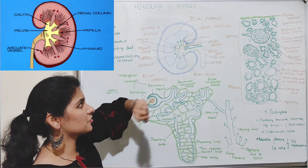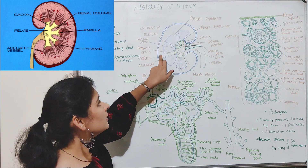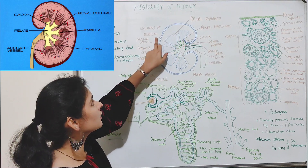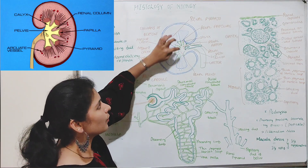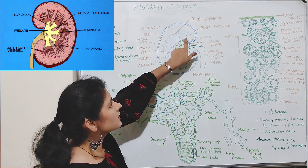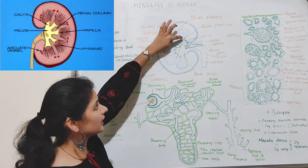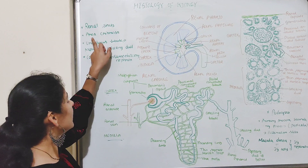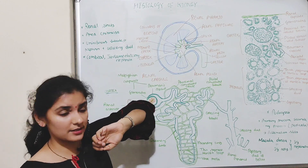The medulla also consists of several pyramid-shaped structures known as renal pyramids or medullary pyramids. Each renal pyramid is separated by projections of the cortex known as the columns of Bertin or renal columns. The broad base of the renal pyramid is in contact with the cortex, whereas the narrow apex opens into the minor calyx. The tip of the renal pyramid is called the renal papillae, which has numerous openings. The area of the renal papillae with these openings is called the area cribrosa, through which urine enters the minor calyx.